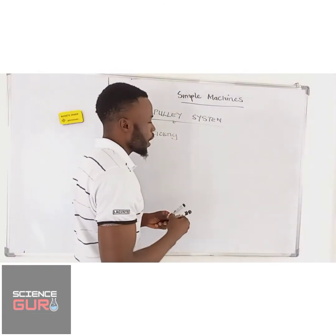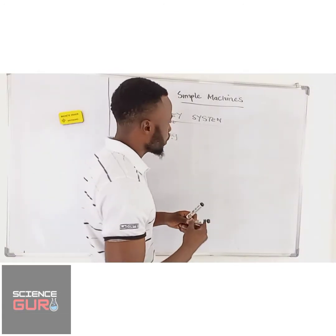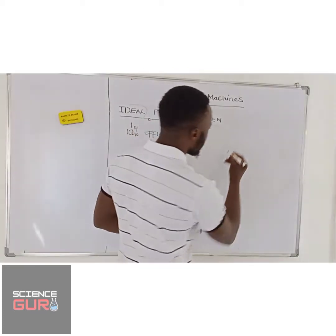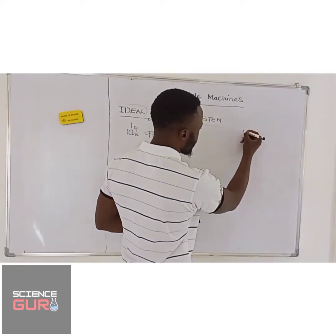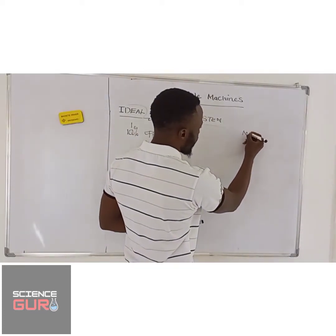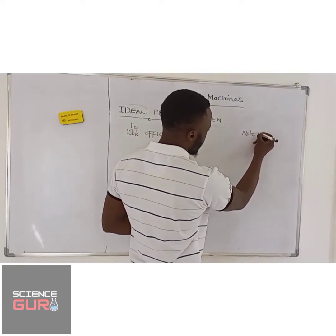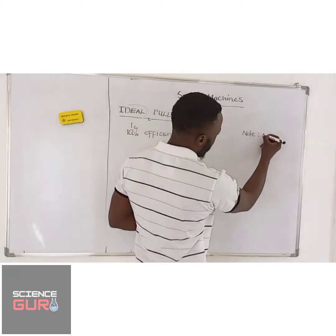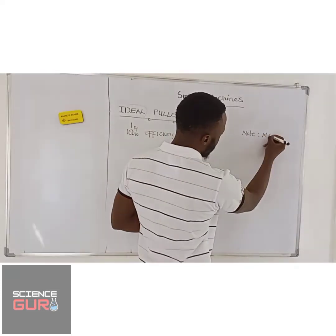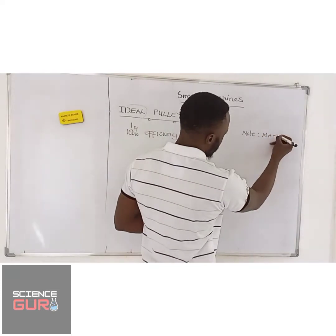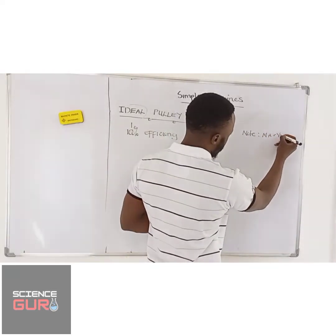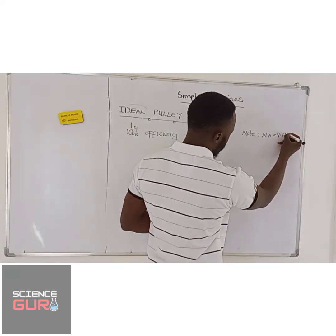For an ideal machine, I want you to take note of this: the mechanical advantage is equal to the velocity ratio.